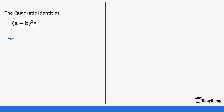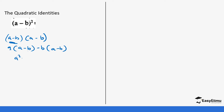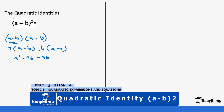So (a - b)² means (a - b) times (a - b). We open it using the long method, so we use this expression to open the other one. It's a into bracket (a - b), then minus b into bracket (a - b). Opening this gives a², then a times minus b which is minus ab, then minus b times a which is minus ab.